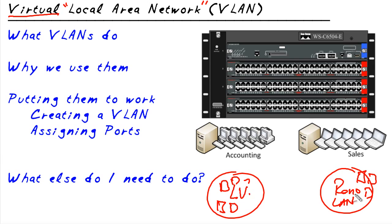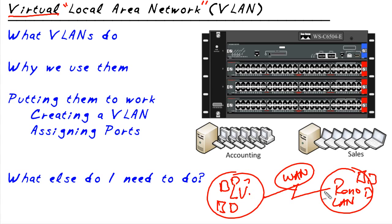If we wanted devices in Las Vegas to be able to communicate with Reno, we could purchase a wide area network connection. We connect the two together. So when we talk about local area networks, we have a local area network in Las Vegas and a local area network in Reno — high-speed connectivity with geographically close devices, a campus, the same building, et cetera.